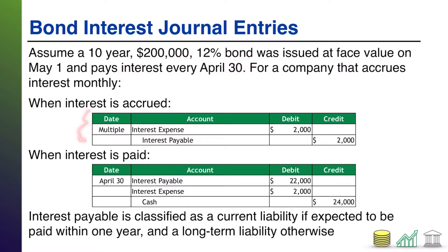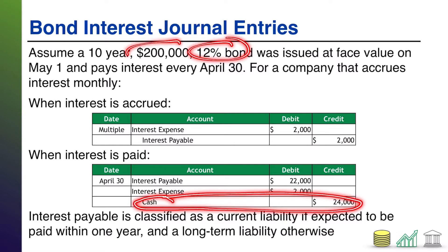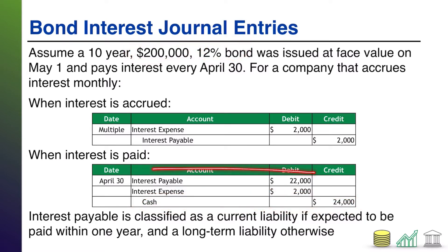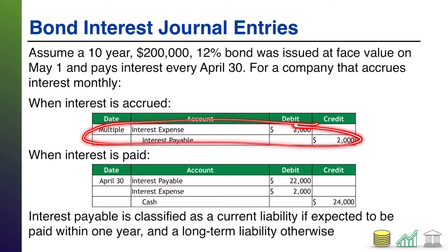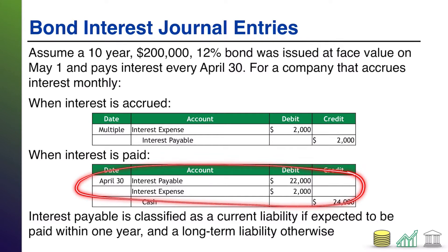You're going to pay it in April. So that's what's going to happen basically for every month from May through the following March. Then when you get to April, you will pay out the full year's interest of $24,000 — that's just 12% of $200,000. Part of that comes out of the payable that you've been accruing, because you've accrued 11 months at $2,000 per month — $22,000 of payable to pay out. And you've got the interest expense for April, $2,000. That would just be the normal journal entry, except in April you're actually paying that amount, not accruing it to a payable.